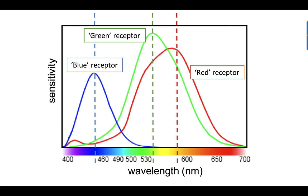When the brain gets equal signals from both green and red cones, it interprets this as yellow light. That is why red and green light together look like yellow — red light makes the red cones signal and green light makes the green cones signal, so the brain gets similar signals from them, just as it would if you were seeing true yellow light. You can use a similar explanation to understand why you see a mixture of any two colors of light as if it were a different color.